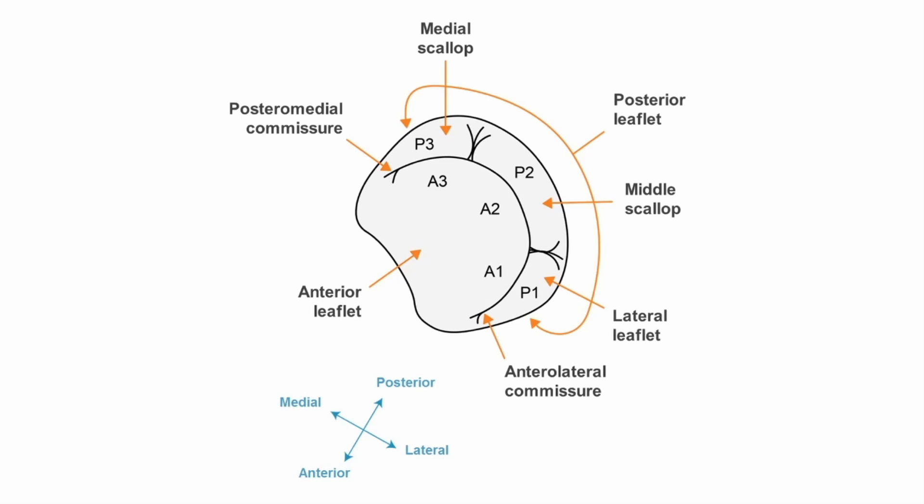The anterior leaflet occupies approximately one-third of the circumference of the annulus. The posterior leaflet occupies the other two-thirds and both leaflets are divided into three segments or scallops.